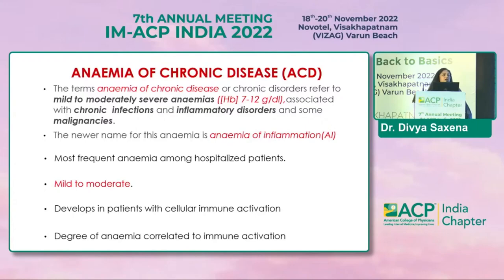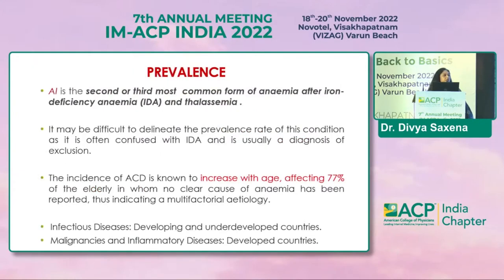It is most common among hospitalized patients and develops in patients with cellular immune activation. The degree of anemia is usually correlated to immune activation in that particular patient. Regarding prevalence, anemia of infection or inflammation is the second or third most common form of anemia after iron deficiency anemia and thalassemia. It is difficult to determine the exact prevalence because it is often confused with iron deficiency anemia and is usually a diagnosis of exclusion. The incidence increases with age, affecting almost 77% of the elderly where there is no clear-cut cause of anemia, usually because of multifactorial etiology.